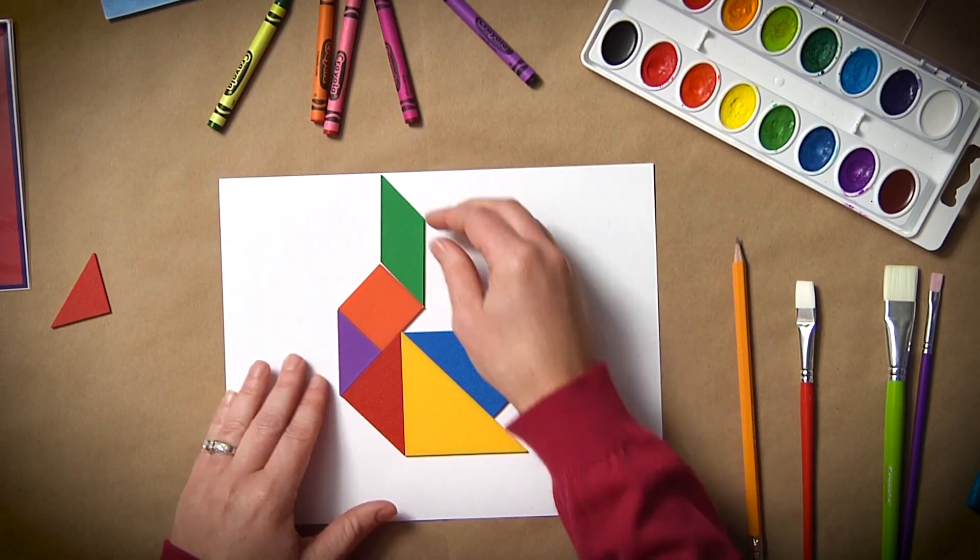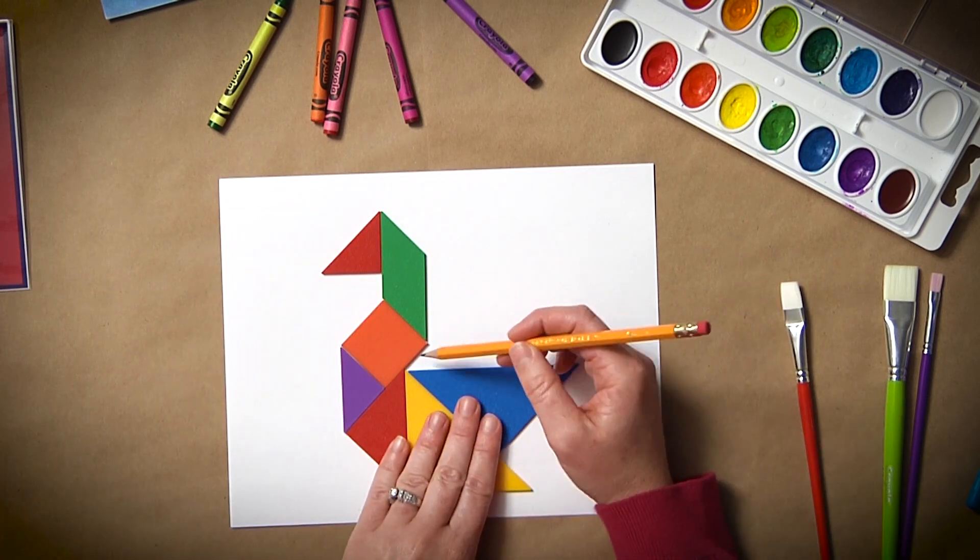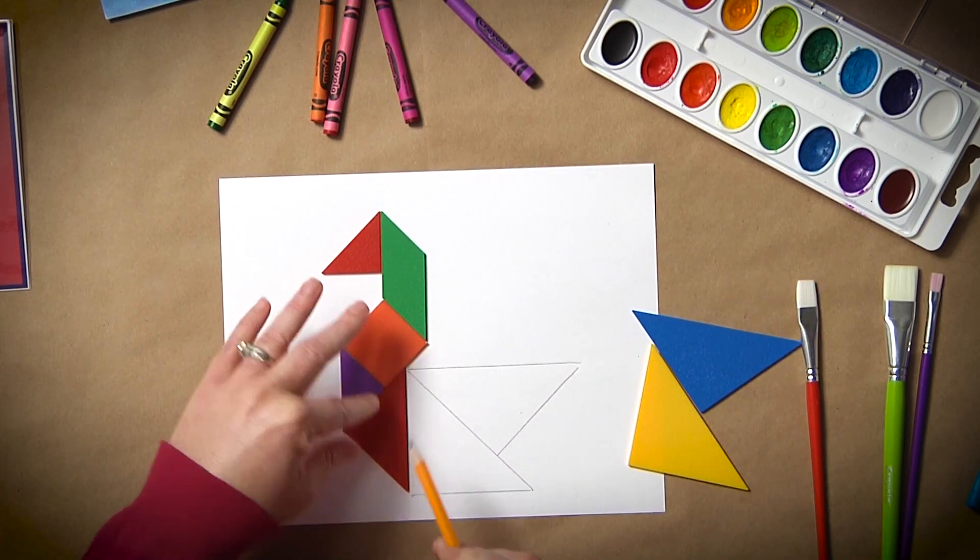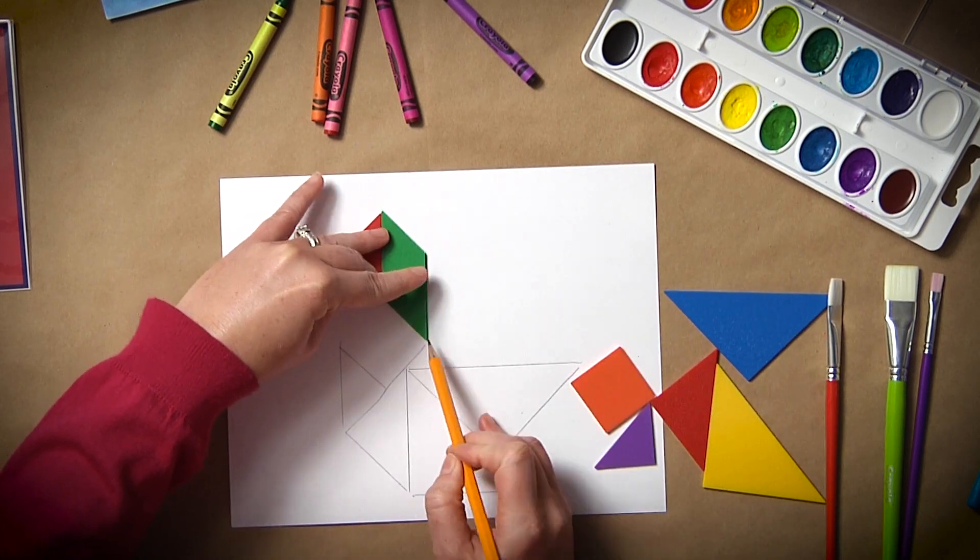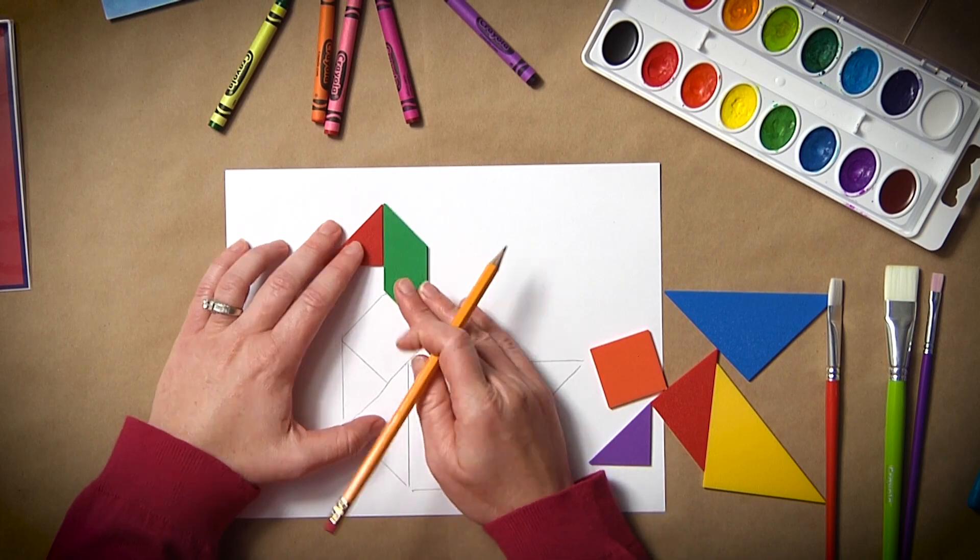Once they've decided on an animal, have the student trace each individual shape. Depending on the type of art you'd like to create, you could also have the students just trace the outline of the animal to make a silhouette.